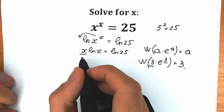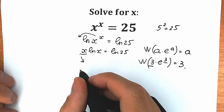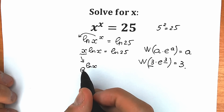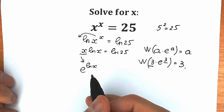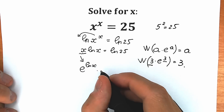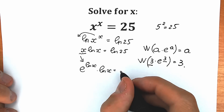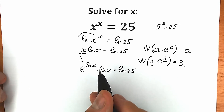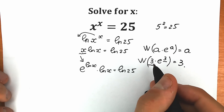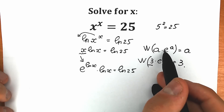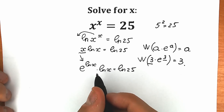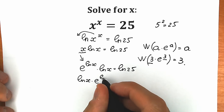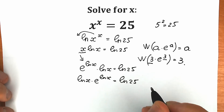Instead of this x, let's write e to the power natural log x. This is absolutely the same expression because the natural log has base e, and we can easily cancel the base and the natural log — as a result we get our x, so it changes nothing. So we have natural log x times e to the power natural log x, equal to natural log 25. Now let's change the order here, since we have multiplication. In the general Lambert W case, a comes first and e is in second place, so let's swap positions. As a result we have natural log x times e to the power natural log x, equal to natural log 25.